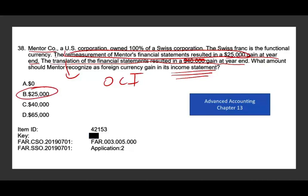All you have to know here is: translation goes into OCI, and remeasurement gain or loss goes on the income statement. What goes on the income statement? The remeasurement — which is $25,000. This topic is covered in depth in my advanced accounting course, Chapter 13. This is not an intermediate accounting topic; this is advanced accounting.